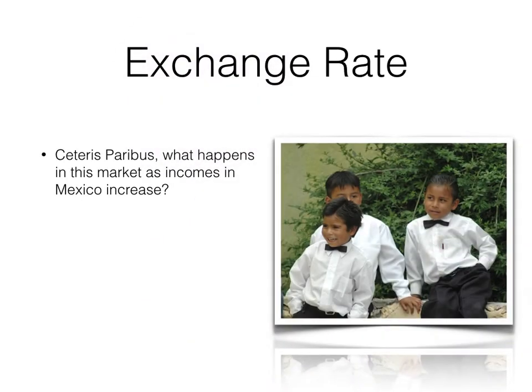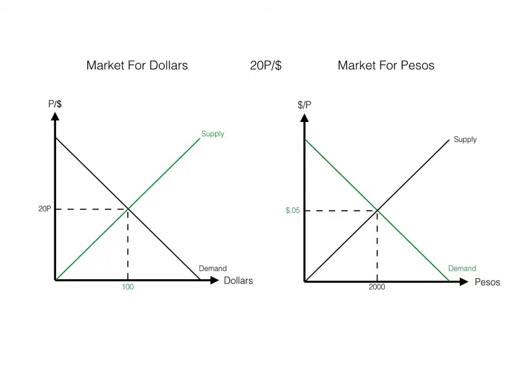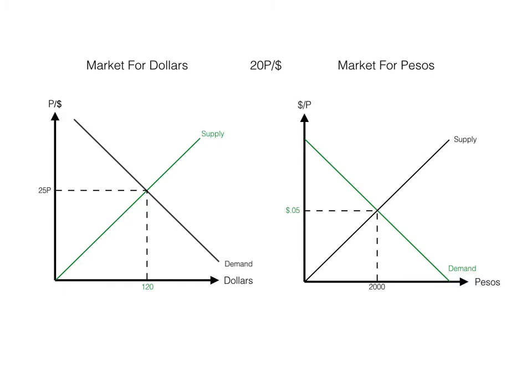Let's look at a market example — the market for dollars, or the peso-dollar exchange rate. What happens when incomes in Mexico increase? Workers in Mexico start earning more, they're more productive, their incomes increase. Imports are normal goods, so the Mexicans demand more of our goods — they want imports from the U.S. Therefore, to buy those goods, they first must obtain dollars. The demand for dollars increases, and now the exchange rate is 25 pesos per dollar instead of 20. It now costs Mexican nationals 25 pesos to obtain a dollar rather than 20.